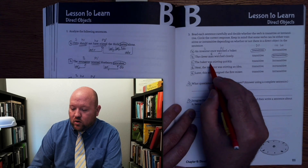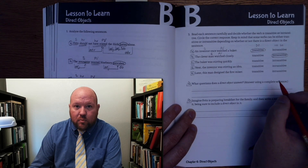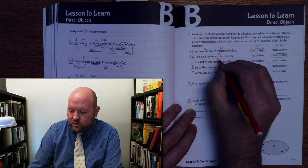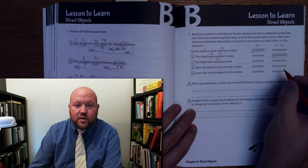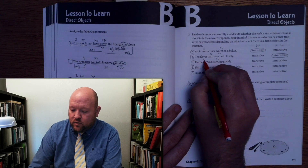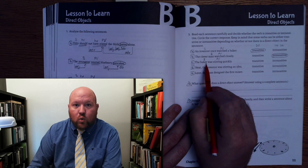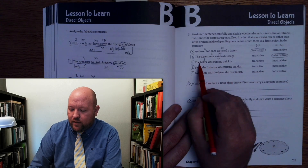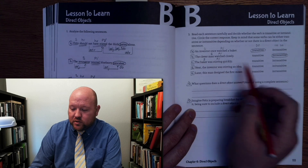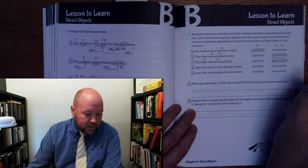Next: 'The baker was stirring quickly.' Do we know the predicate verb? We do — stirring. Who was doing the stirring? The baker. Now, do we know what the baker was stirring? It doesn't tell us. It just tells us that he was stirring quickly, but it doesn't tell us what he's stirring. It is intransitive.